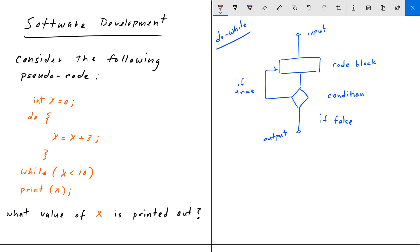So initially we start off with some initialization of X is equal to zero. The code block here is reassigning X to another value. So we reassign X to X plus 3. And the condition is that X is less than 10.